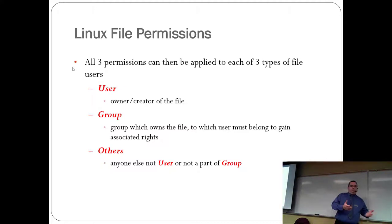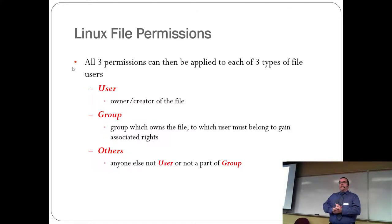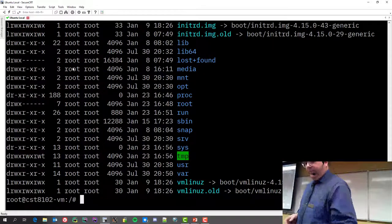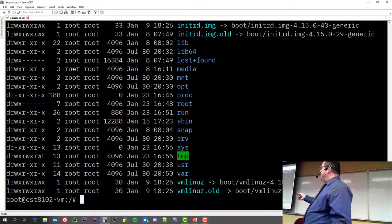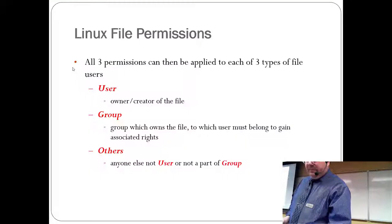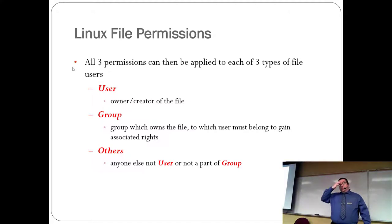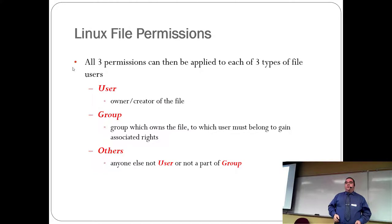All three permissions can be applied to all three groups of users. The first is the user itself — whoever owns or created the file. The group applies if you belong to certain groups. If you're part of the group listed on a file, those permissions apply to you; if not, they don't. 'Others' is anybody else in the system who is neither you nor in the relevant group — essentially everybody else.